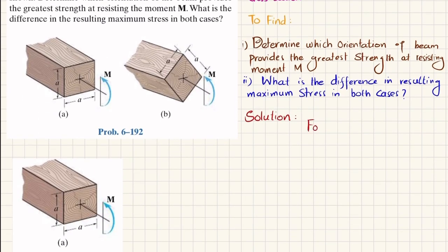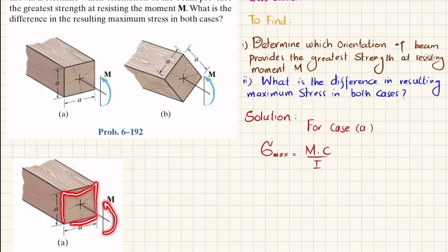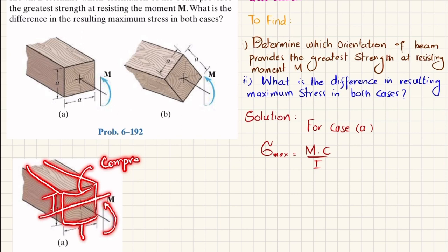Let's start with the solution. For case A, the maximum bending stress is equal to moment times C divided by I. The moment M is applied, and the beam bends such that the lower portion is in tension and the upper portion is in compression. Bending is about the horizontal axis, so the distance from the neutral axis to the top or bottom surface is A/2 on each side.